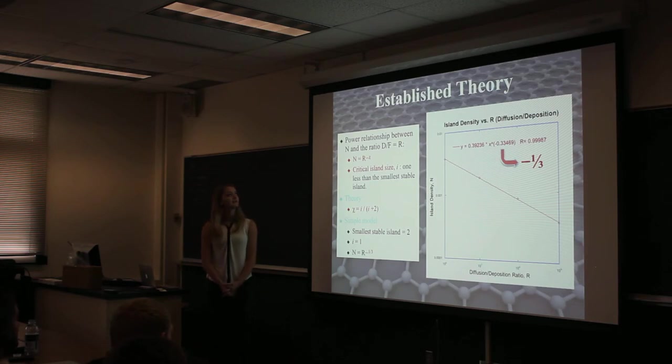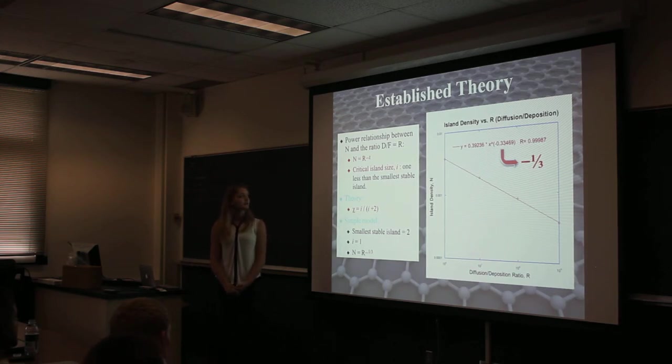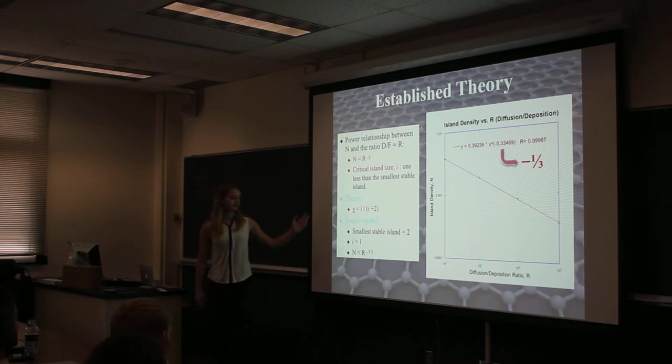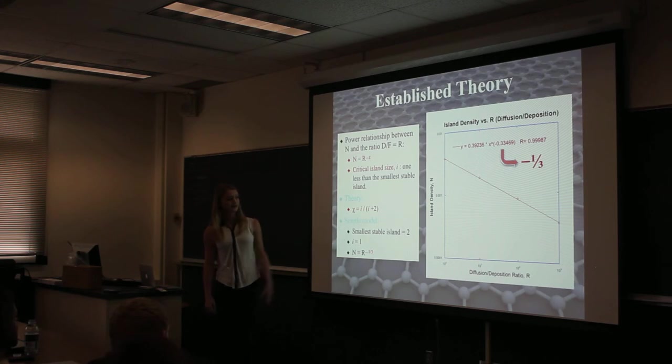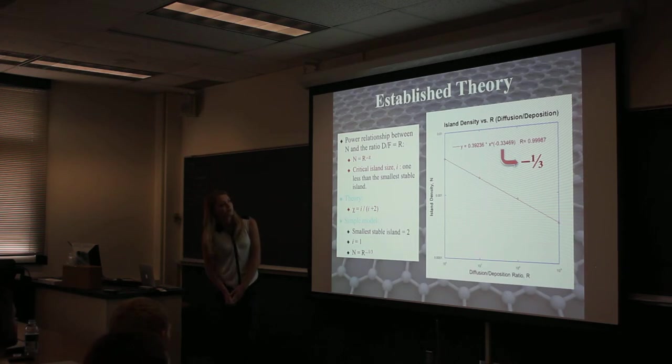What we're also working on is that there's an established theory that there's a relationship between the island density N and this ratio of D over F, and we know that's a power relation with a negative power, and that it's dependent on the critical island size, which is one less than the smallest stable island. The theoretical prediction is that chi is going to be equal to i divided by i plus 2, and in this simple model that I'm working with, where any two monomers fuse to become an island, i is equal to 1, and you would expect N to go as R to the negative 1/3. These are the results I have just in preliminary, and I'm getting something that's a chi of 0.33, which is close to negative 1/3. It correlates well with theory.